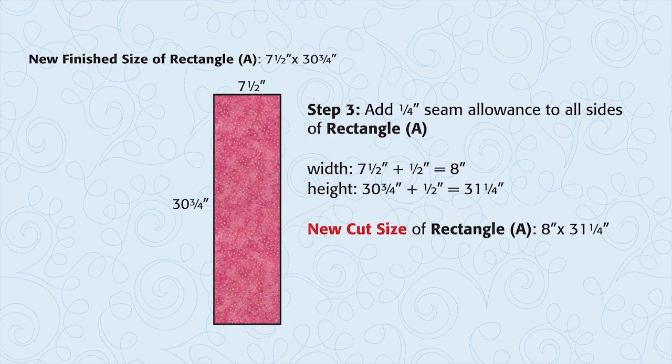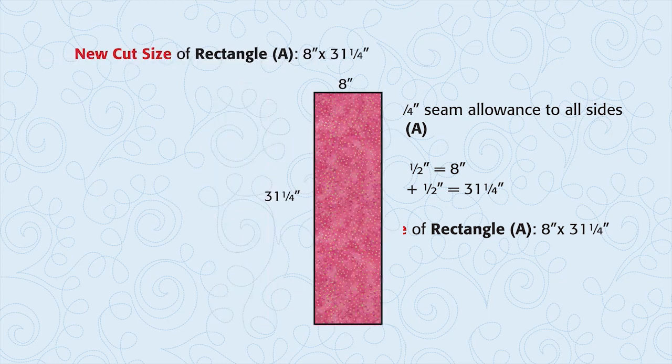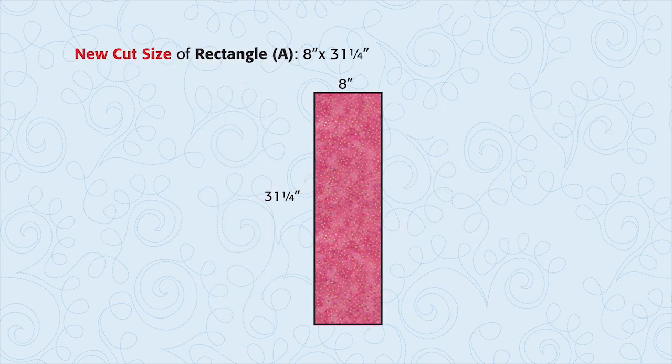Now we need to add the seam allowance back in for the cutting size. Seven and a half plus a half inch equals eight inches. Thirty and three quarters of an inch plus a half inch equals thirty one and a quarter inches. So our three inch by ten and three quarter inch rectangle becomes an eight inch by thirty one and a quarter inch rectangle.